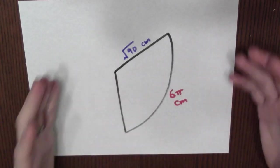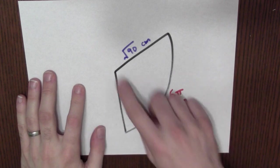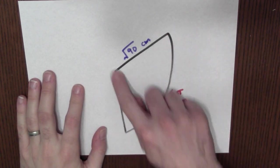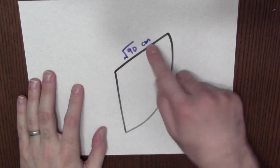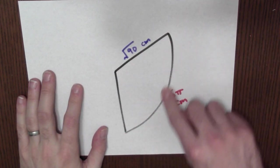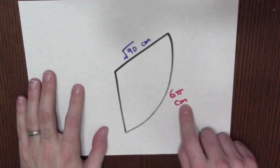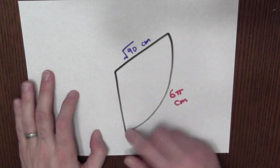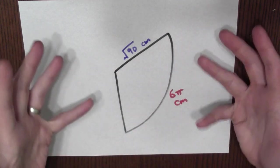Let's suppose that I have a cone of a certain size. Suppose to make this very concrete that I start with this little piece of a circle. This circle has radius square root of 90 centimeters, and the length of this arc here is a bit more than 18 centimeters. Specifically it's 6π centimeters. Now I could cut this thing out and then fold it up to make a cone.